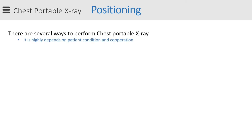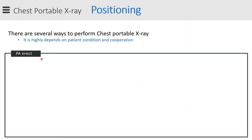Now let's start the main subject, which is positioning — the way we perform the x-ray. There are several ways to do the portable chest x-ray, and it highly depends on patient condition and cooperation. The first and most accurate way is PA upright. I use this method particularly in a COVID department for COVID-positive patients.